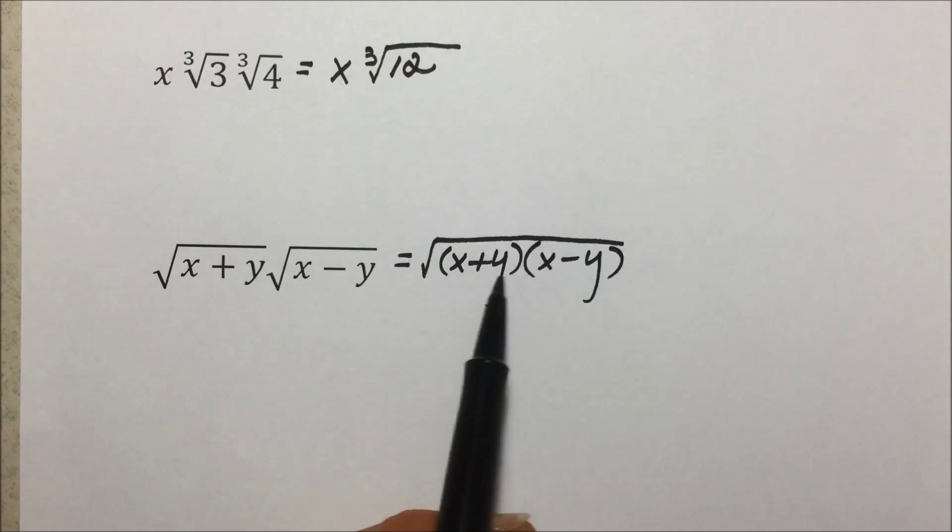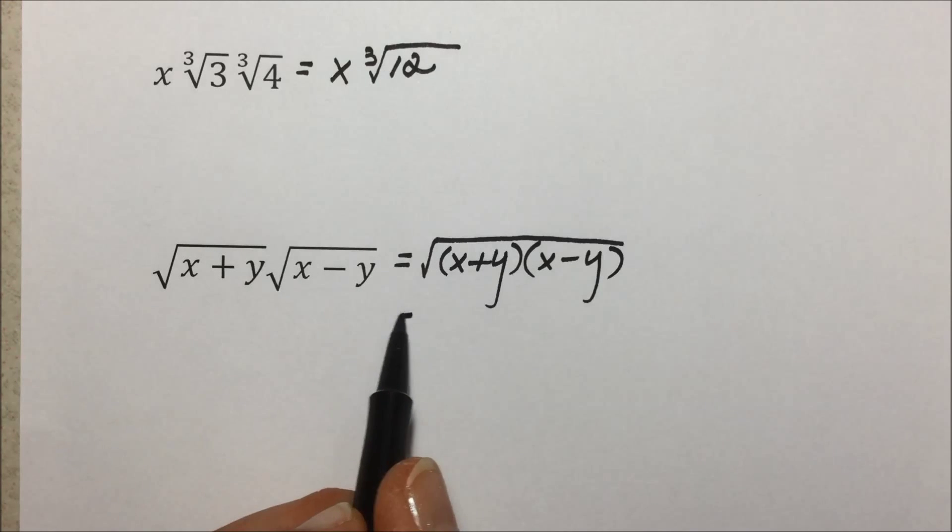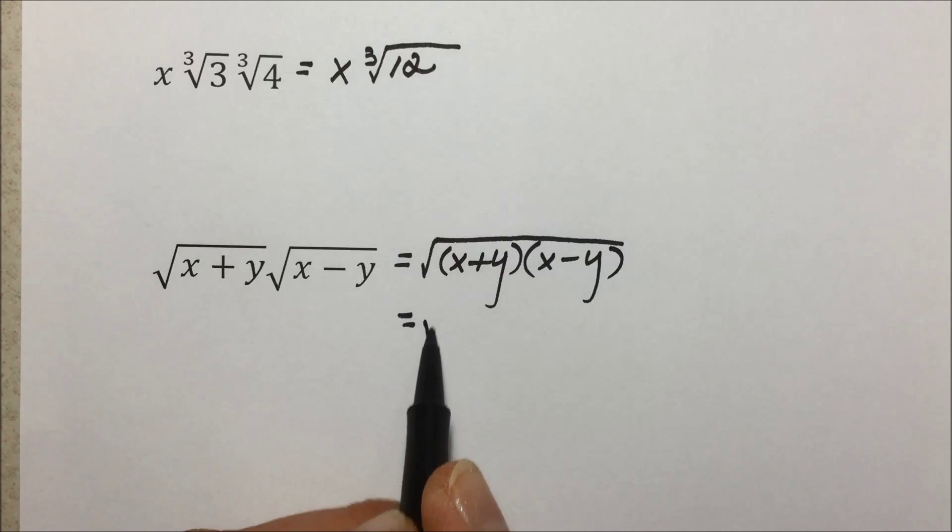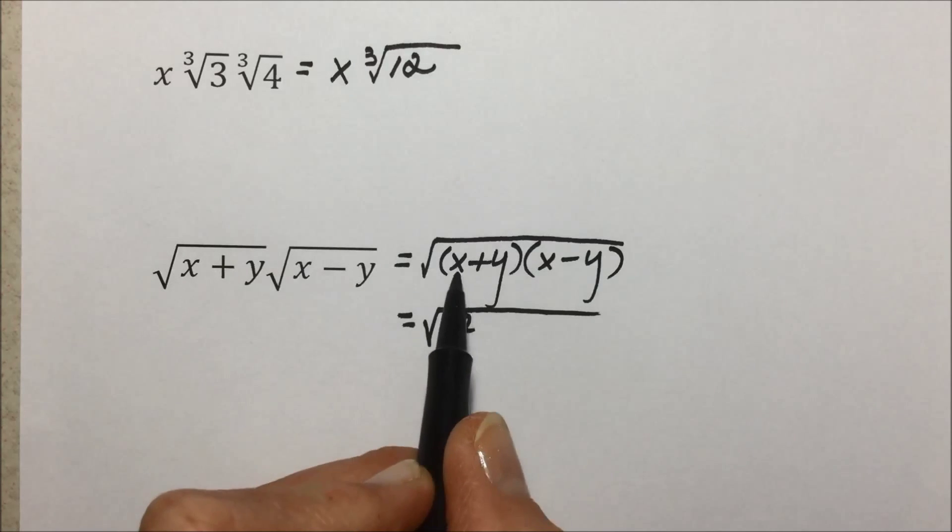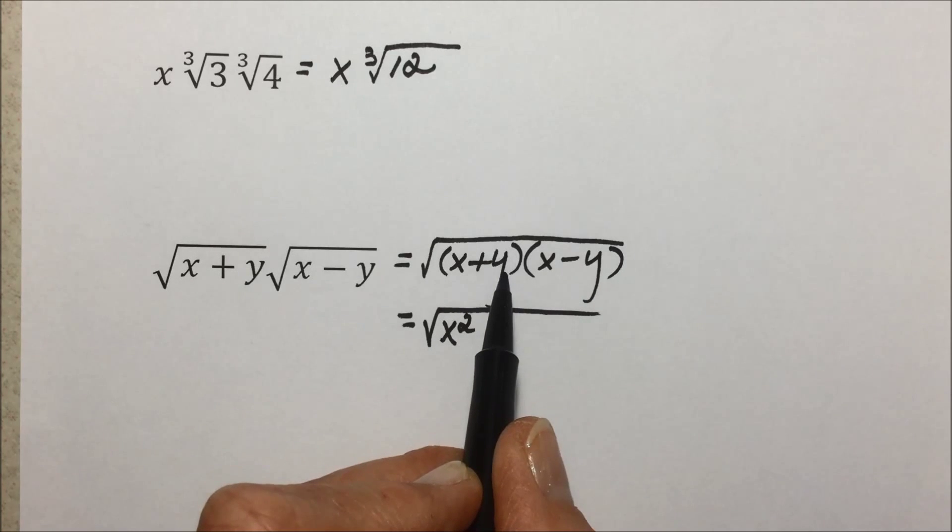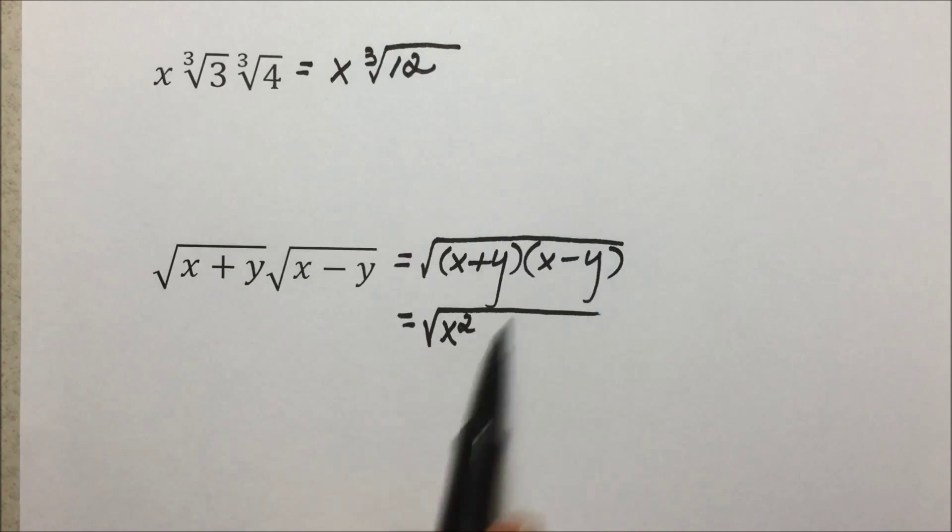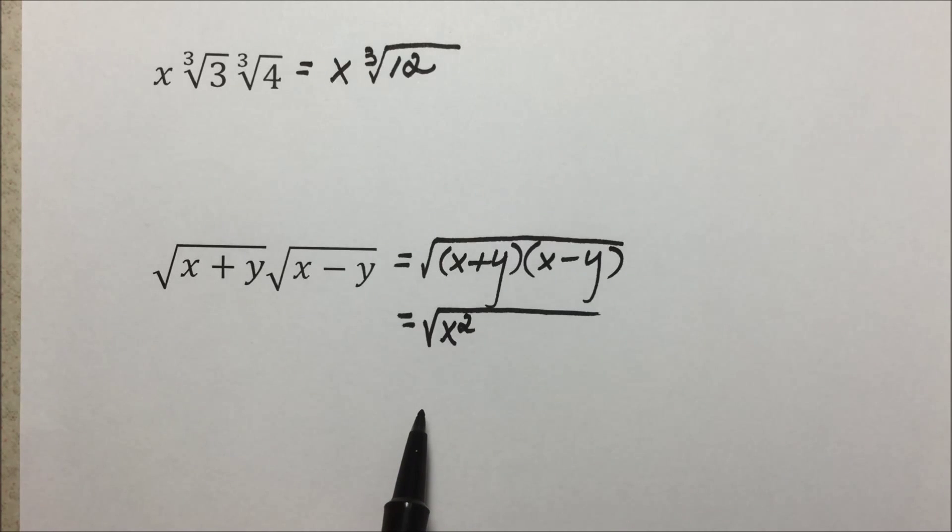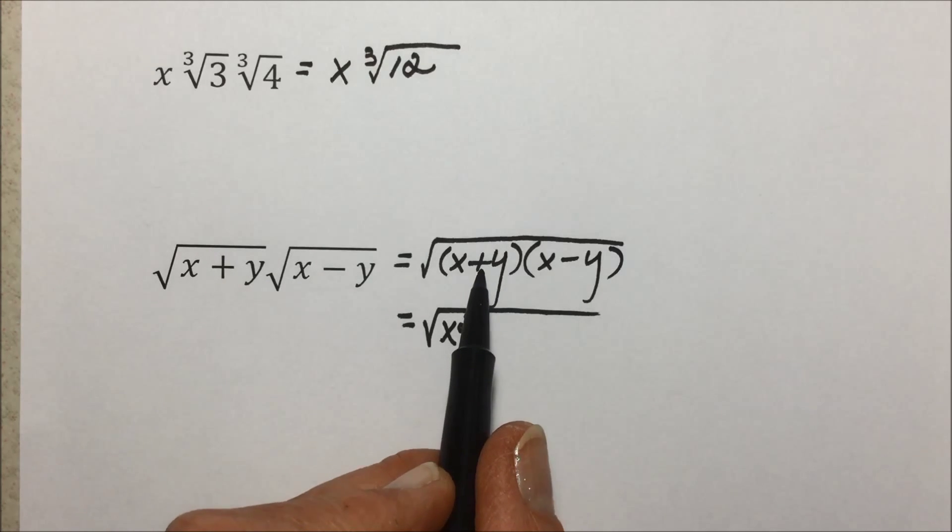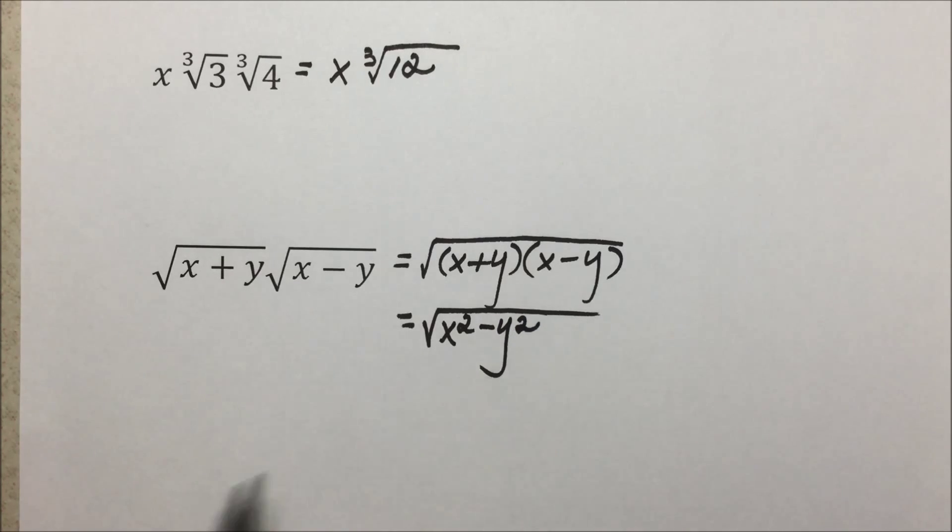We don't have two of the same factors, so we can't simplify other than perhaps multiplying these two binomials together. First terms together give us x squared. Outside terms would be negative xy. Inside terms would be positive xy, which cancel out the previous term. And last, using the FOIL method, a positive times a negative is negative. Y times y is y squared.